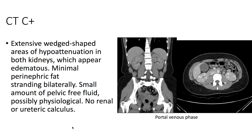Taking a look at the CT of the abdomen and pelvis with contrast, here the portal venous phase, we see that there are extensive wedge-shaped areas of hypoattenuation in both kidneys. These areas appear edematous. There is minimal perinephric fat stranding bilaterally, and there are no renal or ureteric calculi.